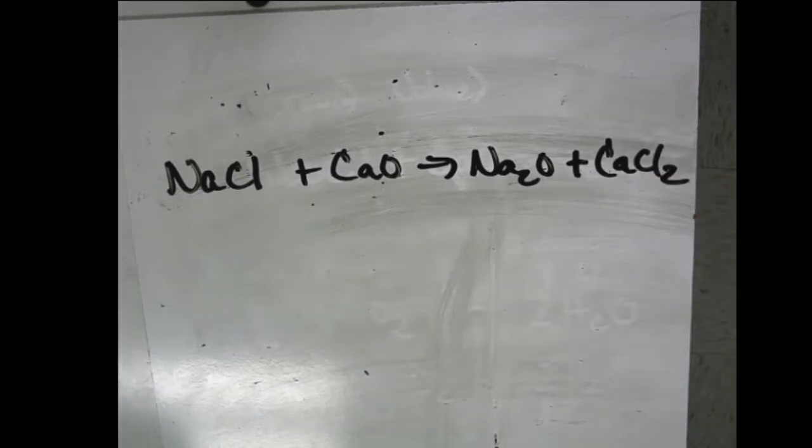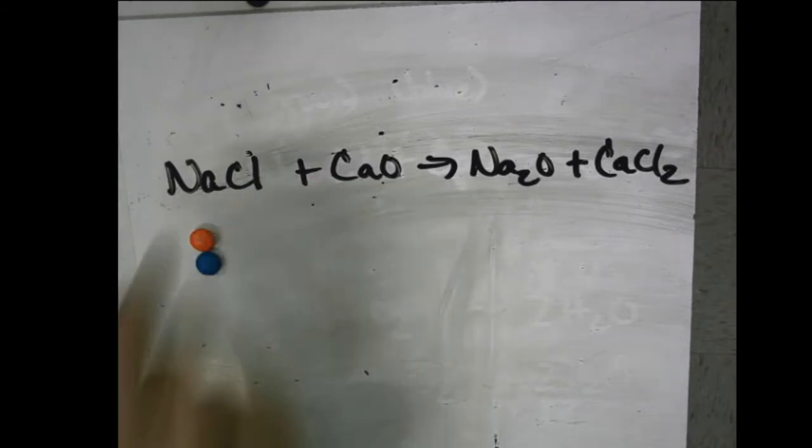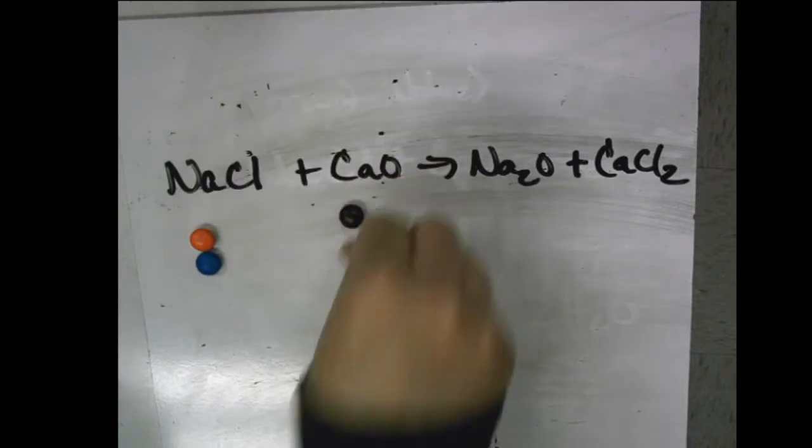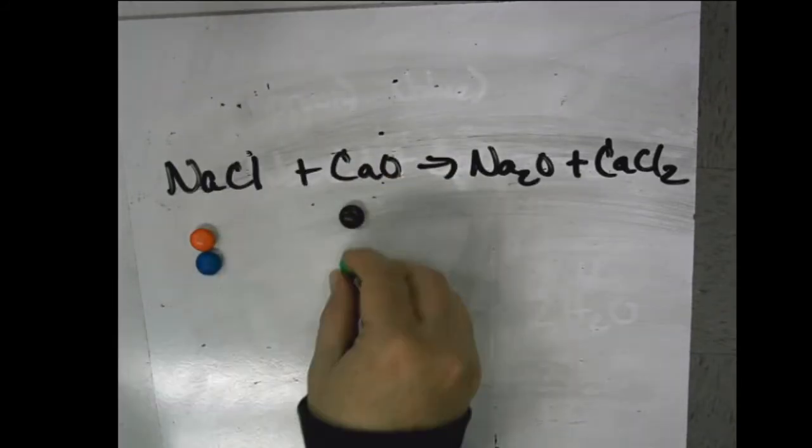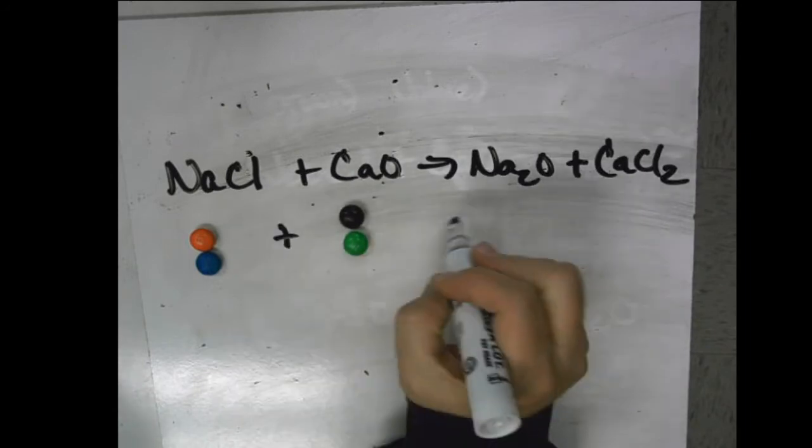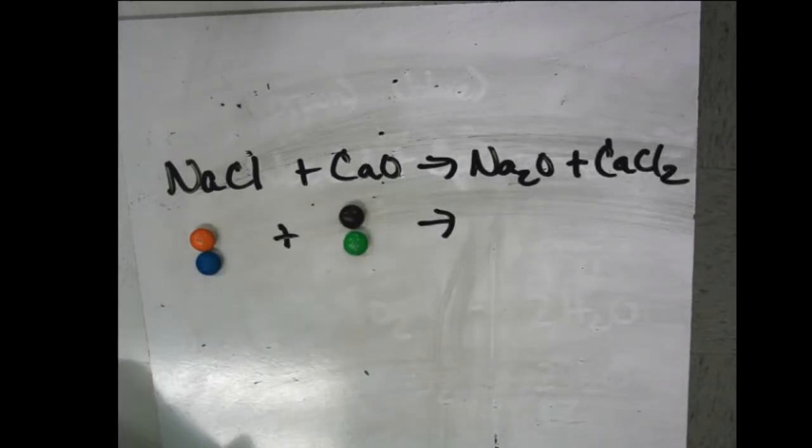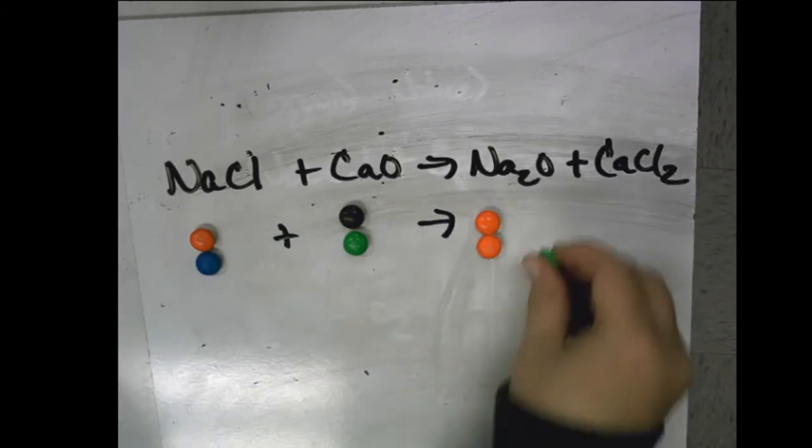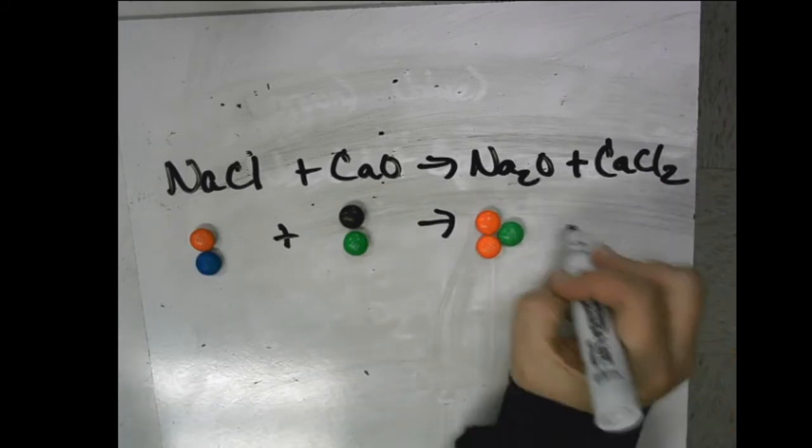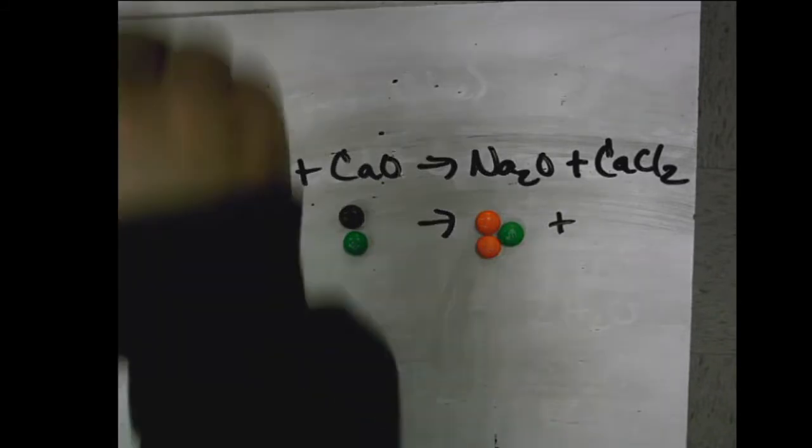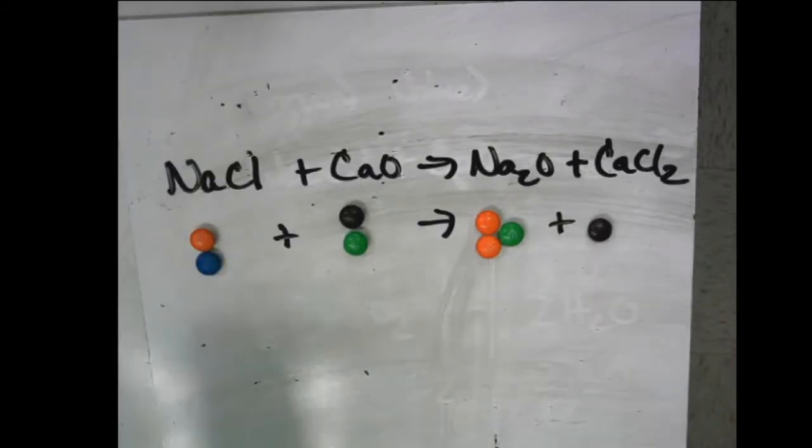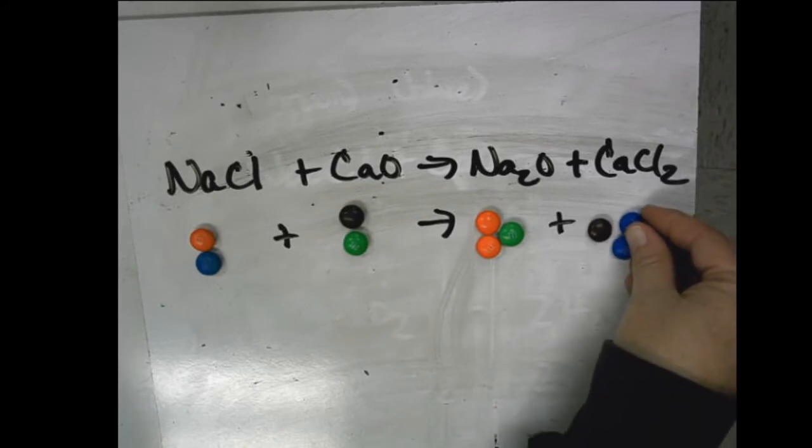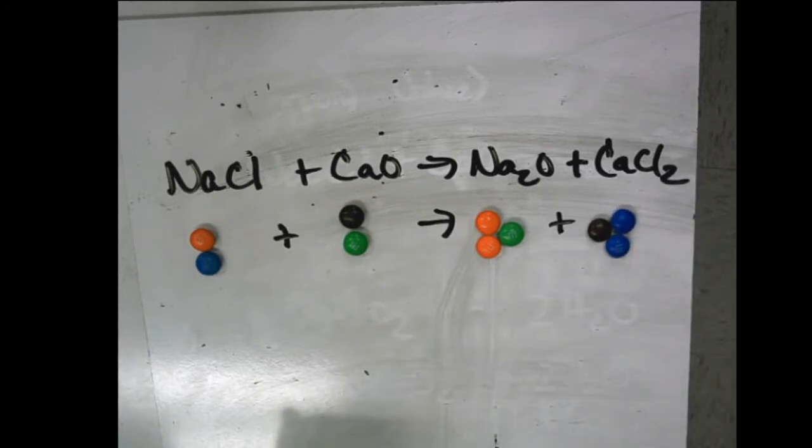And if you look at the colors on the top, it tells you sodium is going to be an orange, so I'm going to have one there. Chlorine is going to be a blue, so I'm going to put a blue there for those. Calcium is going to be a brown. Oxygen is going to be a green. And we're going to put our plus and then our yield. Sodium, again, is orange. Oxygen is green, so I have two sodiums and one oxygen there. Plus calcium, which is going to be a brown. Plus two chlorines, which are blue. So that is my first setup.